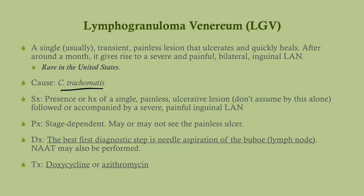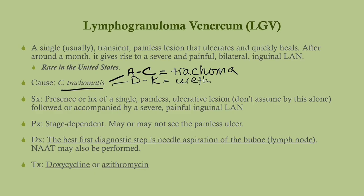Lymphogranuloma venereum is a single transient painless lesion that ulcerates and then quickly heals. After time, it gives rise to painful lymphadenopathy in the inguinal area on the affected side. It is rare in the United States and is caused by Chlamydia trachomatis. There are multiple serovars: serovars A through C cause trachoma, serovars D through K cause the chlamydial urethritis or cervicitis, and L1 through L3 cause lymphogranuloma venereum. This is important for Step 1.